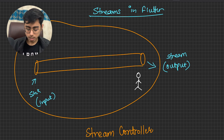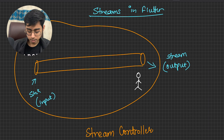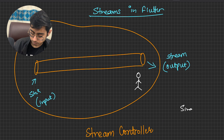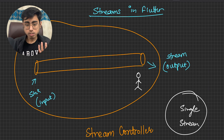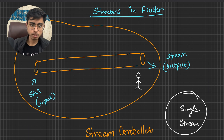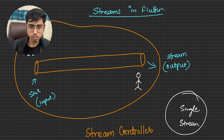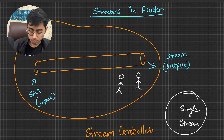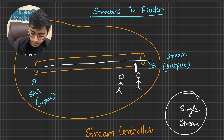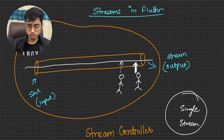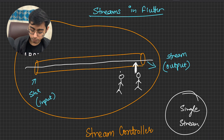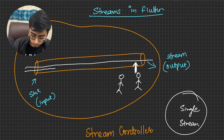Let's say you have only one subscriber listening to this StreamController — whatever data I put inside this stream, that person is going to get that data. This is called a Single Stream. Now one important concept: one stream can only be listened to by one subscriber. If this subscriber is already listening, a second subscriber cannot listen to the same stream.